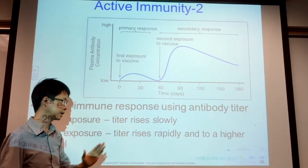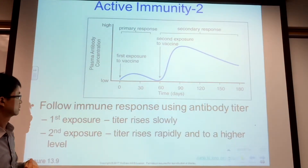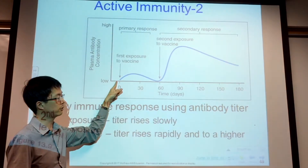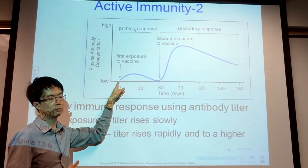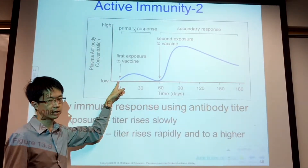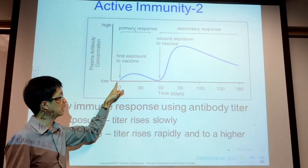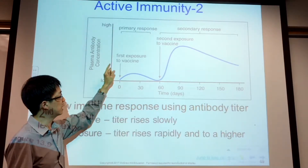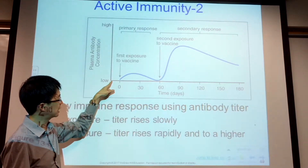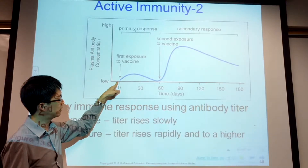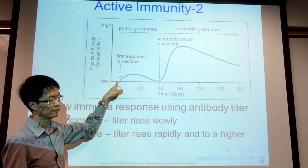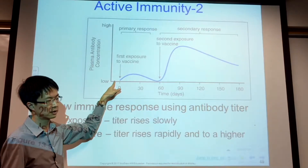This graph is very important — it explains most of active immunity. During first exposure, such as when your classmate is coughing or sneezing next to you, there is a lag of about five to ten days of non-specific response before the adaptive immune response begins.